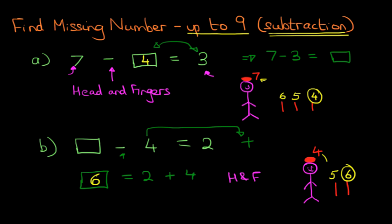6 equals 2 plus 4. Go back to the original question. 6 minus 4 equals 2. So, we've used the head and fingers method for two different examples where the missing number is in different positions. Therefore, we're doing this slightly differently. Just understand the principles of how we've done example A and how we've done example B.